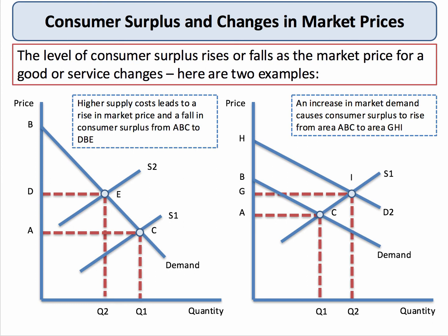Now, consumer surplus equals the area G, H, I. There is a significant increase in consumer surplus. An outward shift of demand does lead to an increase in price, but it also leads to an increase in consumer surplus.